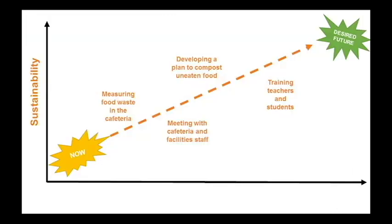Instead of just sustainability as a series of boring lectures and activities that depress people about how terrible things are, when you incorporate action into your lesson plans, you get better results. We can still start with the present — things are not as sustainable as we'd like — and we still have a desired future. But then we put together activities that direct us toward that future: measuring food waste in the cafeteria, meeting with cafeteria and facility staff to talk about problems and potential solutions, developing a plan to compost uneaten food, and training teachers and students to do that composting. Those are the things that actually get us to sustainable solutions.